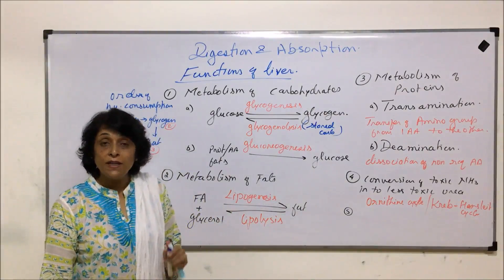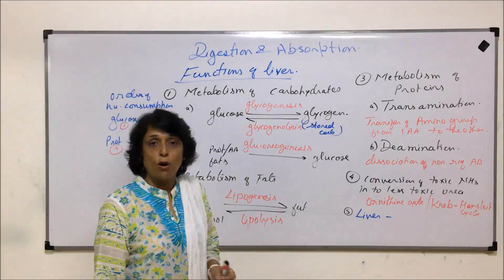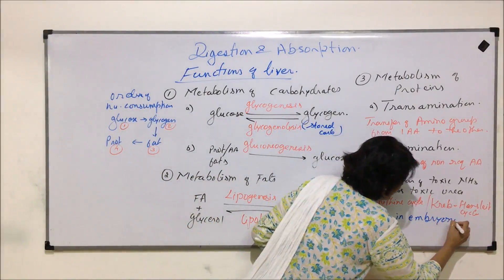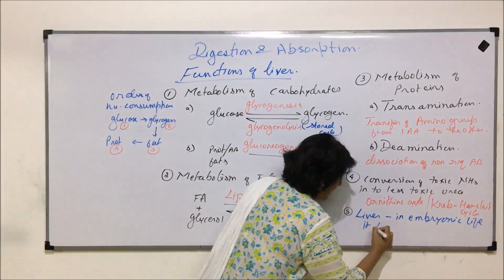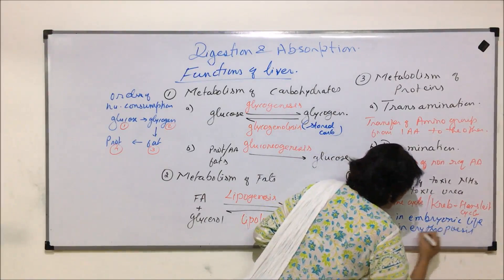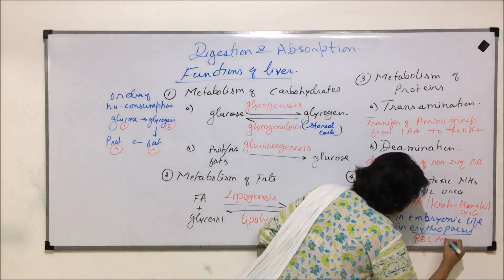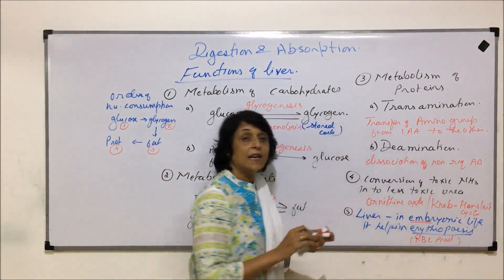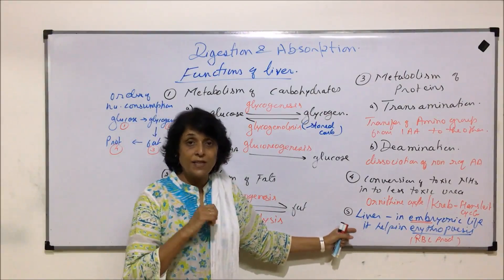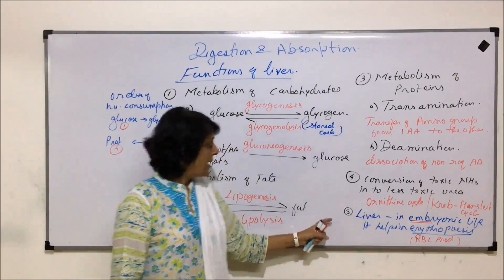In embryonic life, the liver acts as an erythropoietic organ — it helps in erythropoiesis, which is the production of RBCs. We need to specify embryonic life because after birth, this job is taken over by the bone marrow. So only during the embryonic stage does the liver act as the erythropoietic organ.